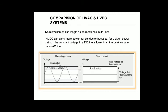Continuing the comparison of HVDC: there is no restriction on line length since there is no reactance in DC lines. In power systems, we have studied inductive reactances and determined the inductive reactance of line conductors, but in DC systems this is no longer valid — DC power does not have reactances.